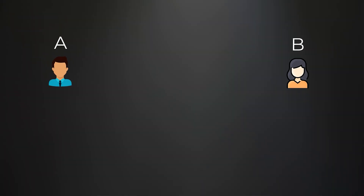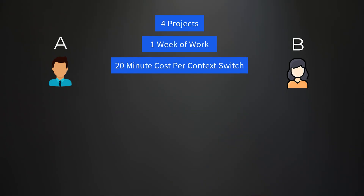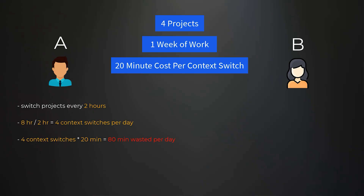Let's say you have person A and person B, and each person has four projects to work on for one week. For an easy number, let's say each time they context switch it costs them 20 minutes. Person A switches between each project every two hours. Eight hours divided by two hours is four — times 20 minutes equals one hour and 20 minutes wasted per day, times five days.